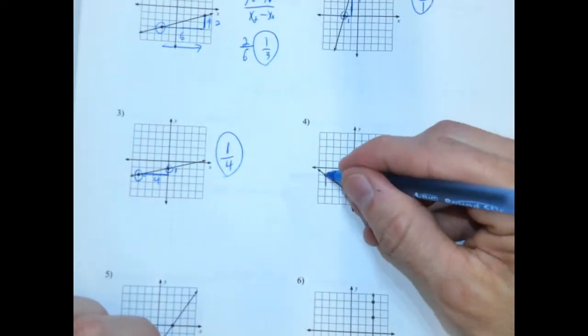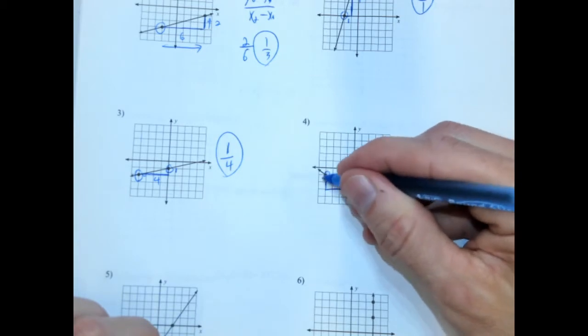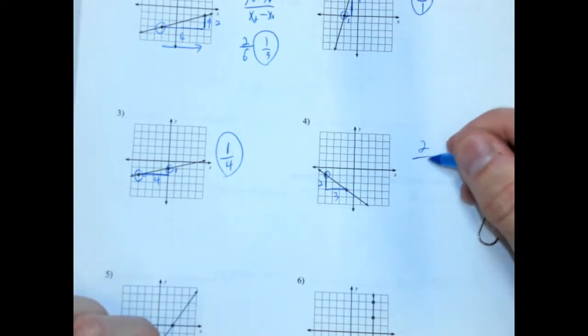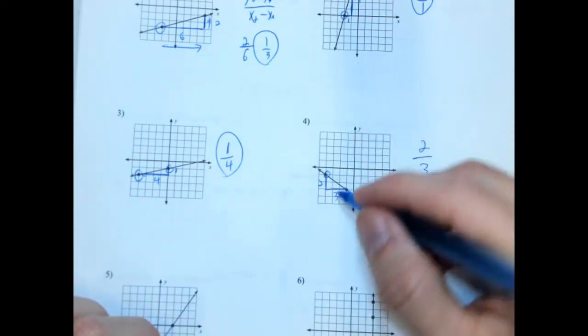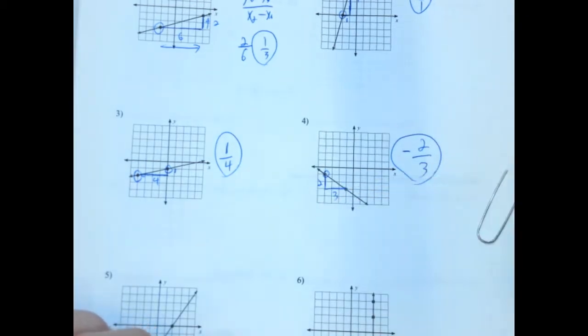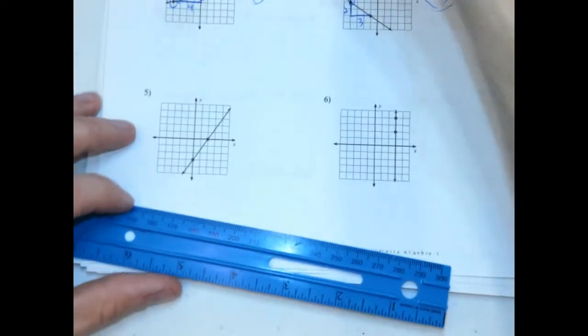Here, we have a negative slope. Check this out. We're starting here. We're going down 2, and then right 3. So 2 thirds. You'll notice when we go down, that's a negative motion, and to the right is a positive motion. So it's negative 2 thirds. You can also tell by looking at it, it's a negative slope, or a negative rate of change.